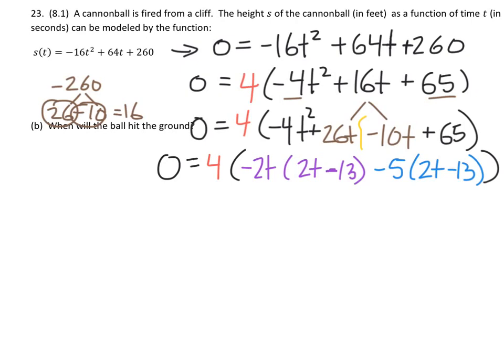Now we have these two terms, as you can see them underlined, and I can factor out a 2t - 13 from both of those terms. So looking at that, I would have a 2t - 13, and then what's left over from those two terms after I factor that out? Well, I'd have a -2t - 5.